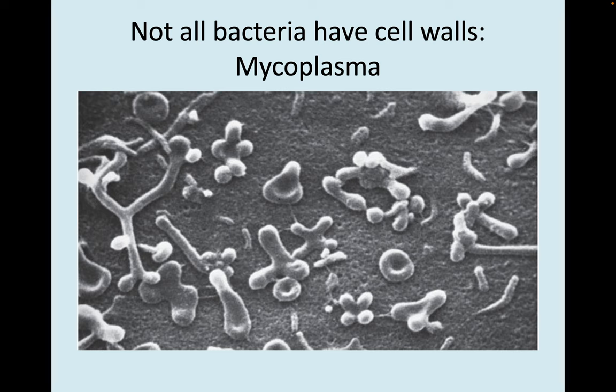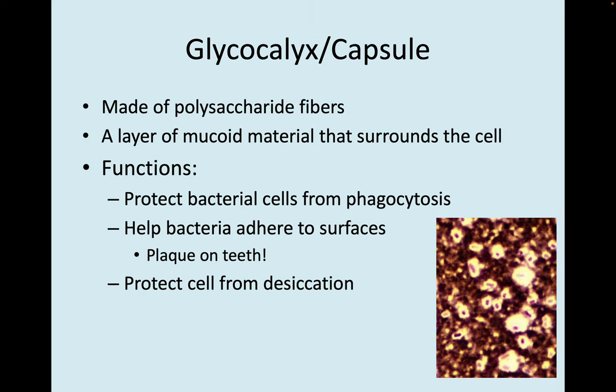Not all bacteria have cell walls — mycoplasma, for example. Some types of bacteria have a glycocalyx or capsule instead, made of polysaccharide fibers — a layer of mucoid material surrounding the cell. It helps protect bacterial cells from phagocytosis or being engulfed by white blood cells. It also helps bacteria adhere to surfaces, like plaque on your teeth, and can protect the cell from desiccation.